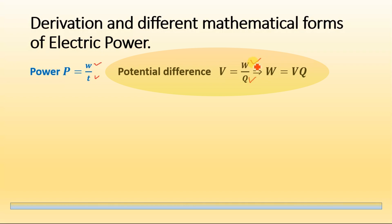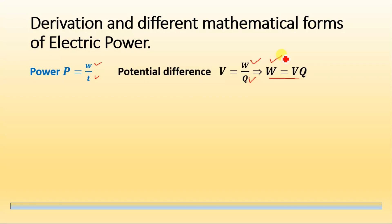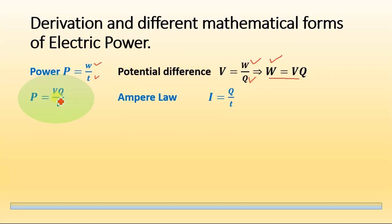Solving this equation for work done W, we get W = VQ. We now substitute this value of W into the power equation, so we have P = VQ/T, where VQ is the value of W.